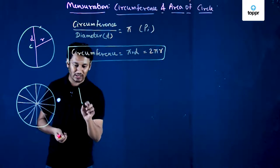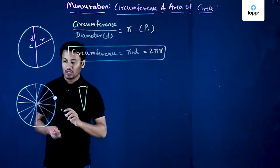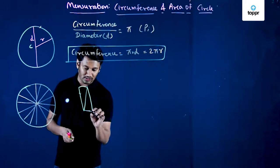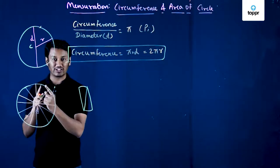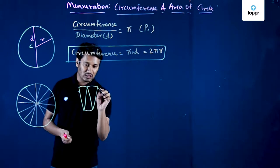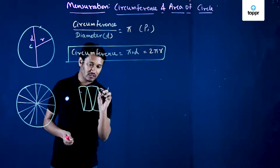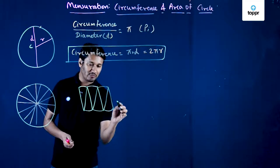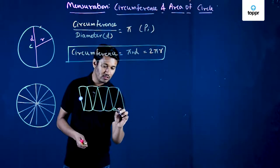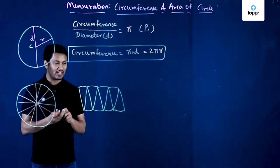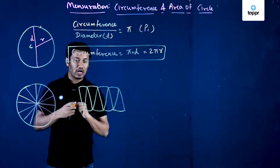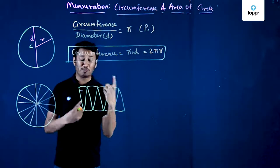I will take the first sector and place it, then take the adjacent sector and place it in a particular fashion — so I have two sectors next to each other. I will then take the third sector, fourth sector, fifth sector, and keep doing this till I have covered all the sectors. By placing all these sectors in this fashion, I can get an approximate shape of a rectangle.